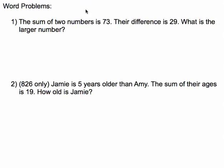If you'd like an example similar to number one, look at the video called Systems Integer Problem. But I'm going to do two because it's similar to what you might see. So I have Jamie is five years older than Amy, and the sum of their ages is 19. How old is Jamie?